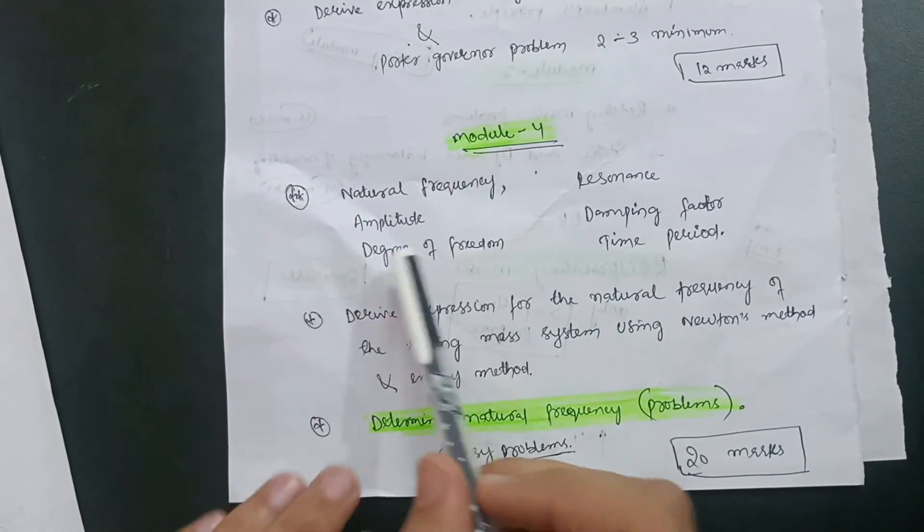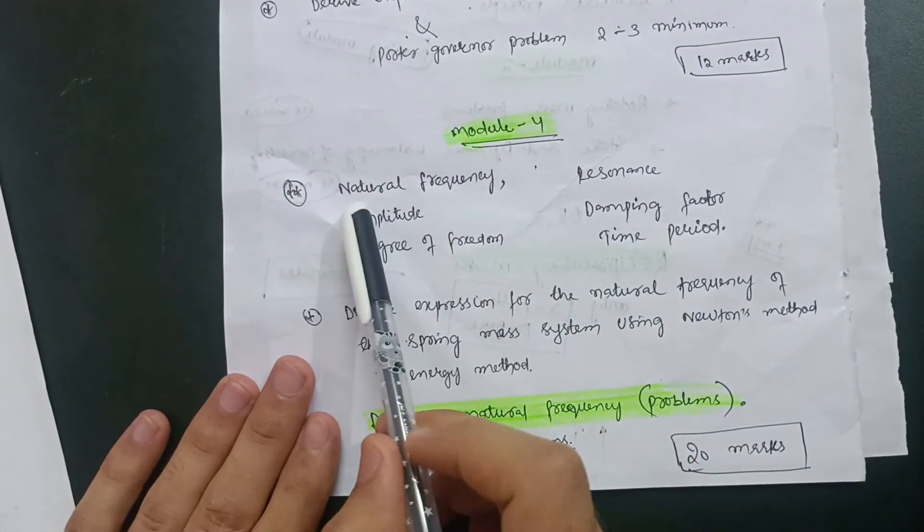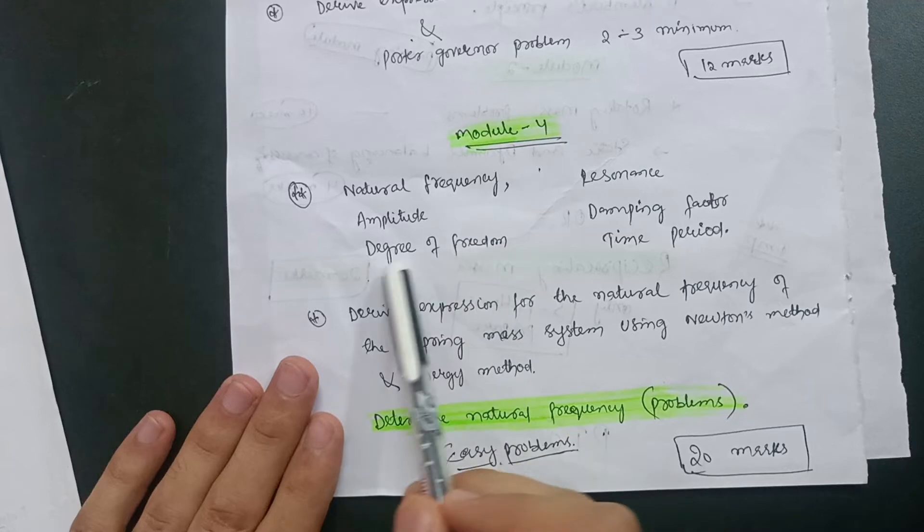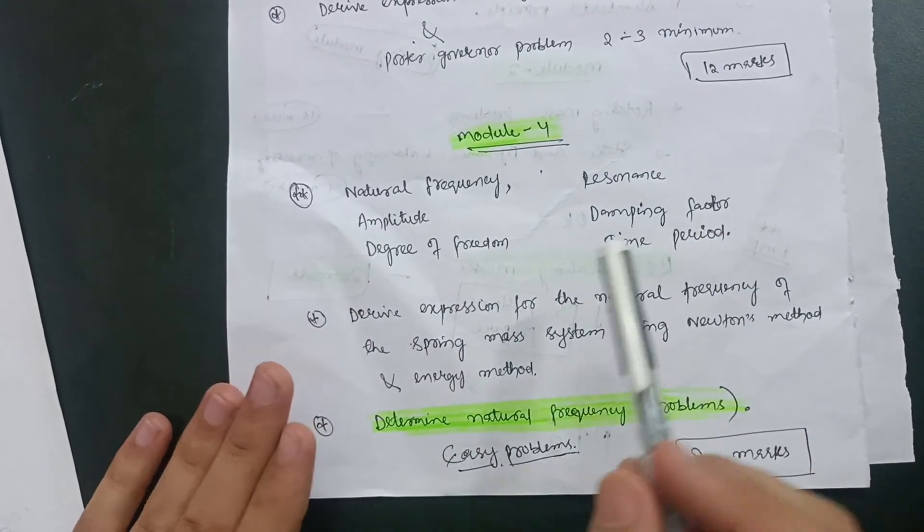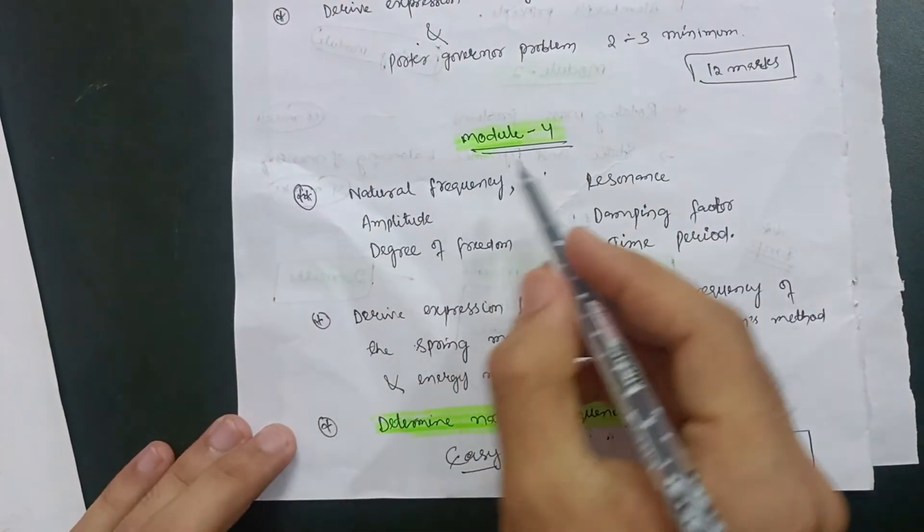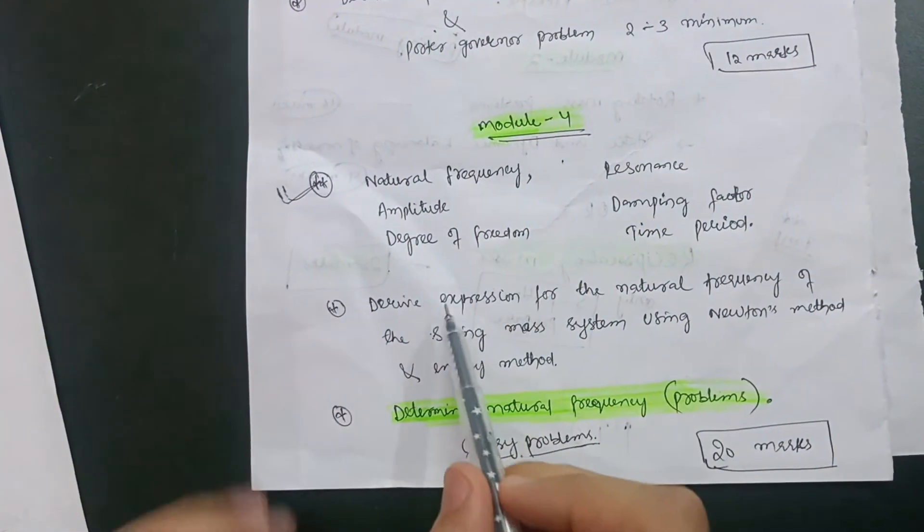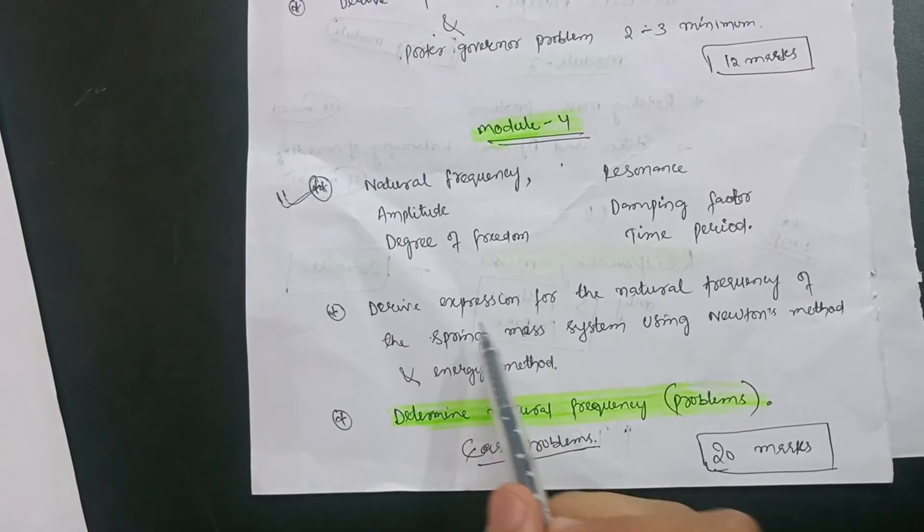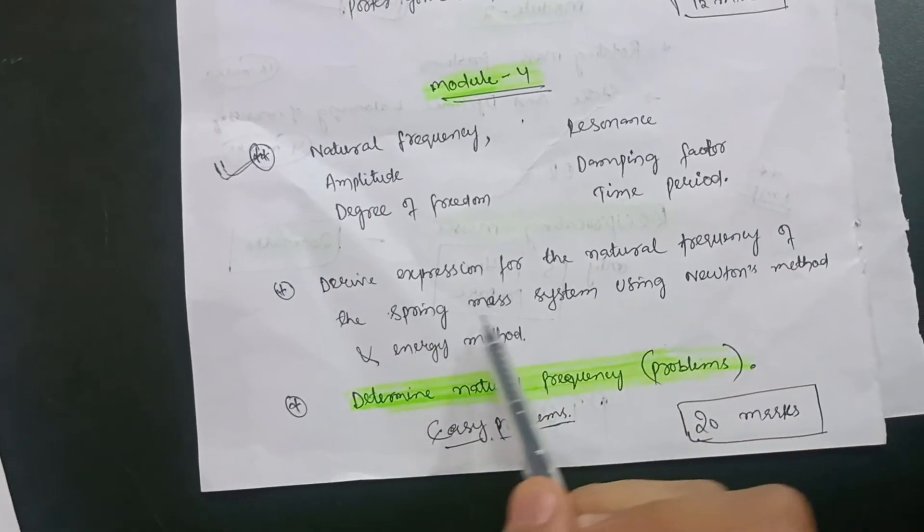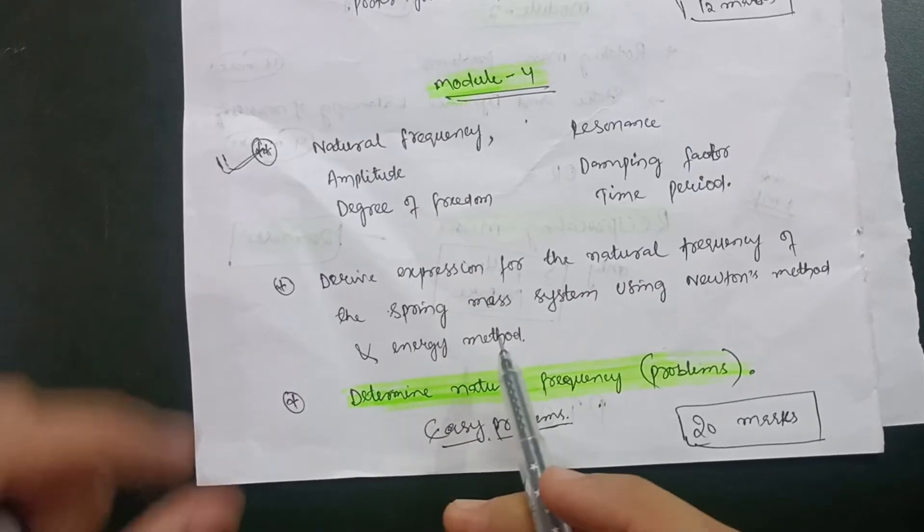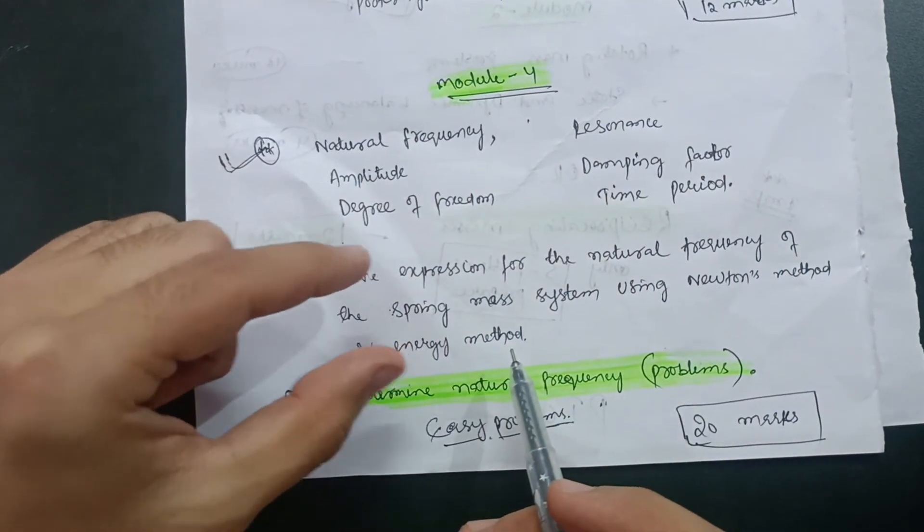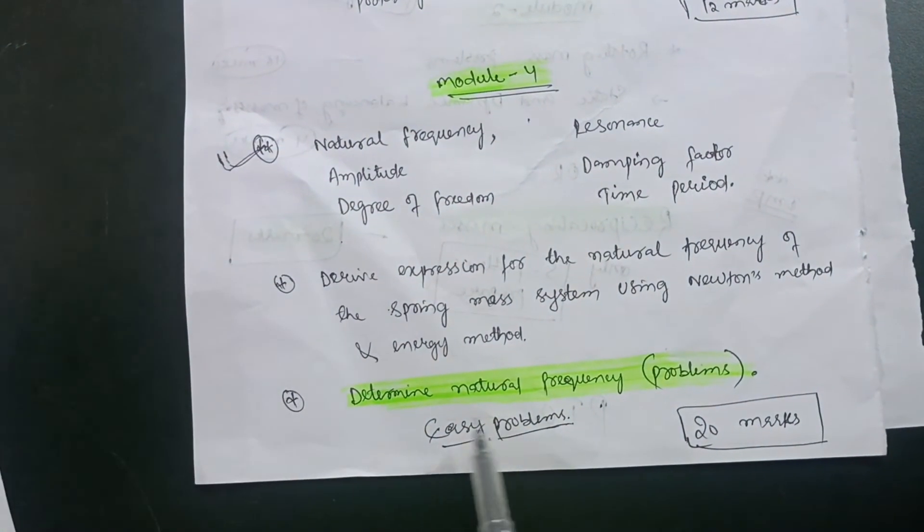Then Module 4 comes up. Just prepare these theory questions: natural frequency, amplitude, degree of freedom, resonance, damping factor, time period. This will be a definite question from Module 4. It is the most important question. Also, there is a derivation: derive expression for the natural frequency of the spring mass system using Newton's method and energy method.